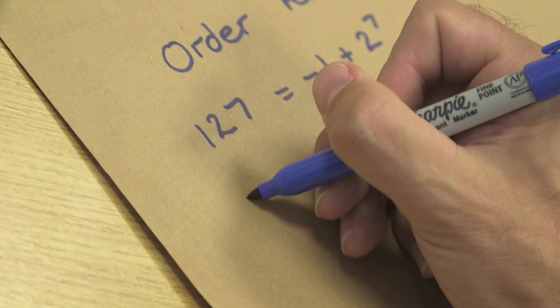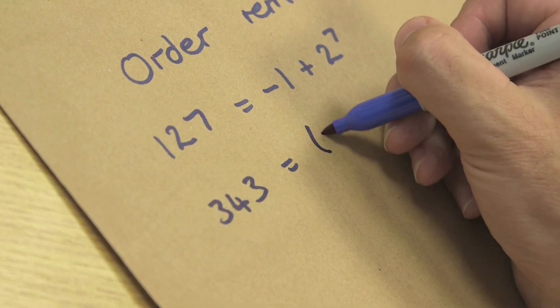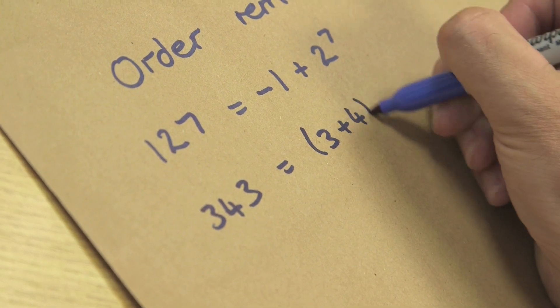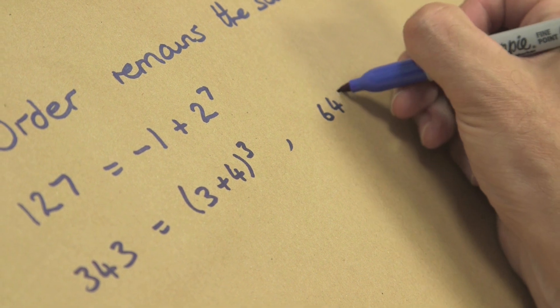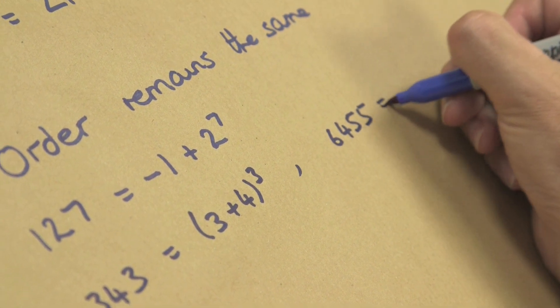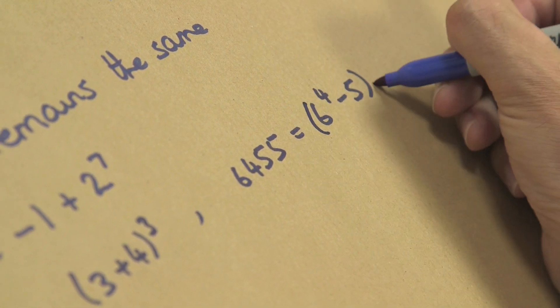So if I want to just get a bit bigger, 343, for example, is just made up of 3 plus 4 to the power of 3. Or I could get a bit bigger. And 6455 is made up of 6 to the power of 4 minus 5, all times 5.